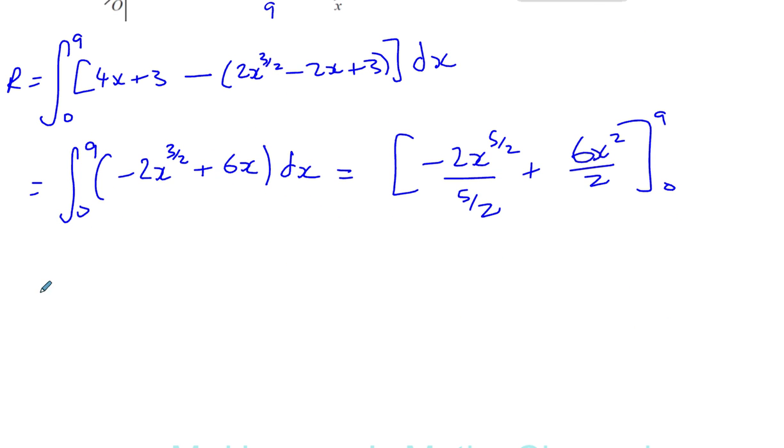Okay, so... Well, this is like 2 times 2 over 5. 2 divided by 5 over 2 is 2 times so that's going to give you 4 over 5. So you're going to have negative 4 over 5 x to the power of 5 over 2 and you're going to have plus 3x squared. Okay, now we're ready to put the values in.